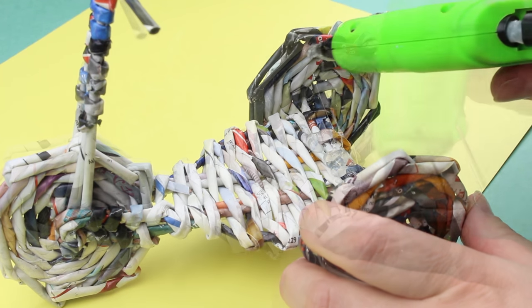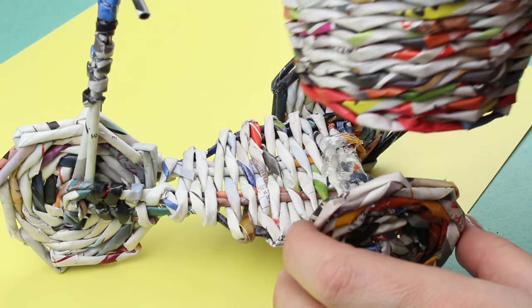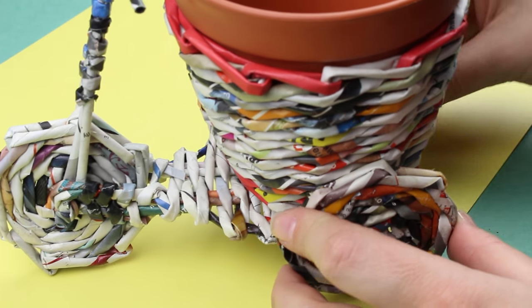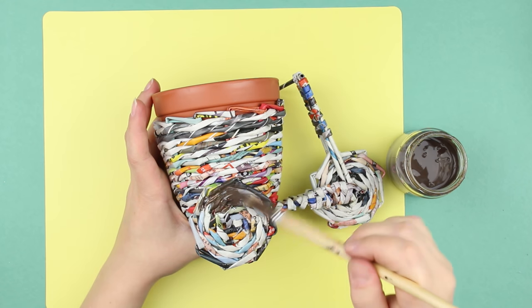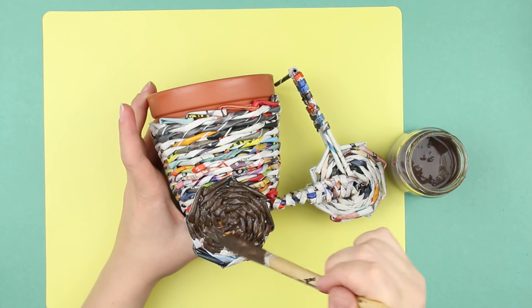Attach the woven pot to the bicycle using a hot glue gun. Apply a dark lacquer finishing coat with a brush. Let it dry.